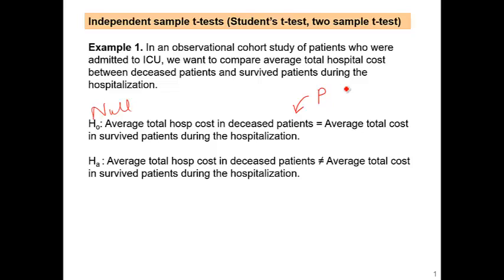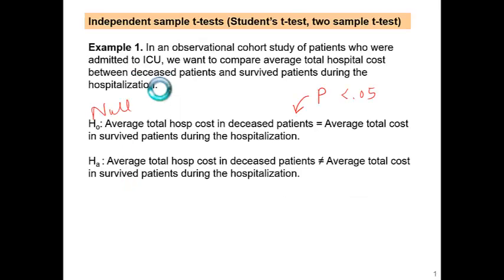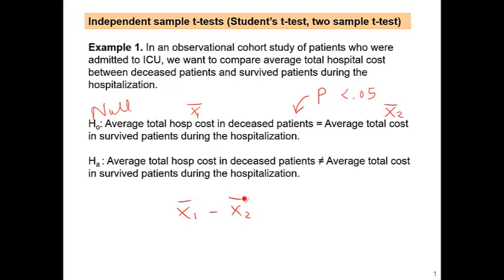We compute the p-value and try to use it to reject the null hypothesis. We are hoping the p-value is less than 0.05. The t-test compares averages: x1 is average total hospital cost in deceased patients, and x2 is average total hospital cost in survived patients. The null hypothesis says these two are the same, and we want to show the difference — that these two are not the same. The t-test compares the difference between two averages.